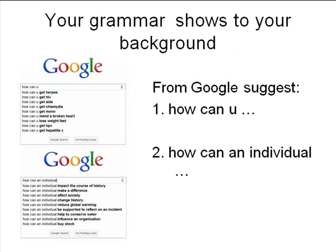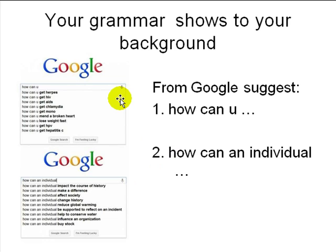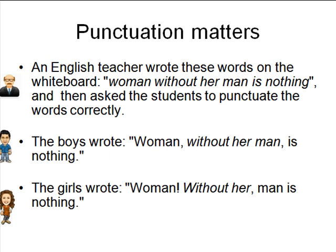Your grammar shows your background. If you type 'how can you' into Google, you see searches like 'how can you get herpes,' 'how can you get AIDS.' But if you type 'how can an individual,' you see 'how can an individual impact the course of history,' 'how can an individual make a difference.' Google collects these anonymously, showing what people with similar spelling and grammar tend to search. People can tell what kind of background you come from just by your language. Your language is a reflection of the company you keep.